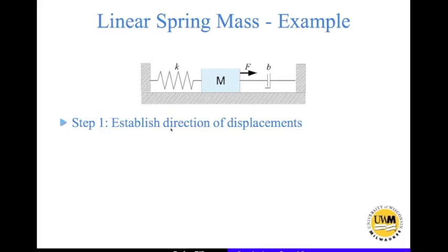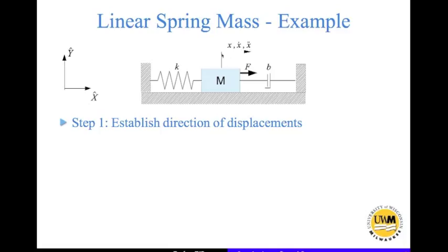The first thing we do is establish directions of displacement, for which we need a coordinate system fixed to the non-moving ground — an inertial frame of reference. Everything is measured with respect to this coordinate system. We are only concerned with the x direction, since nothing moves in the y direction and all forces there are balanced. Moving in the positive x direction is positive, so displacements, velocity, and acceleration in that direction are all positive.